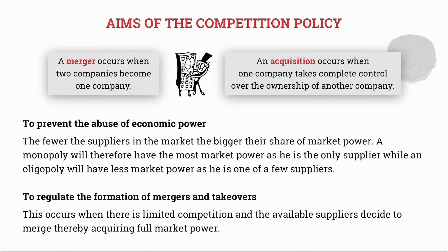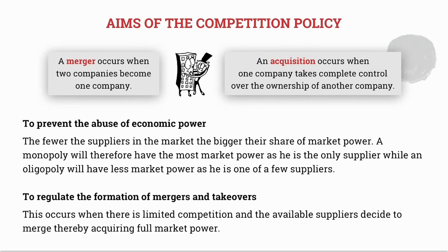Now let's look at the aims of the competition policy. But before we do that, let's differentiate between a merger and an acquisition. A merger occurs when two companies become one company — for example, when ShopRite and Checkers joined forces. An acquisition on the other hand occurs when one company takes complete control over the ownership of another company, meaning one company buys out another company.